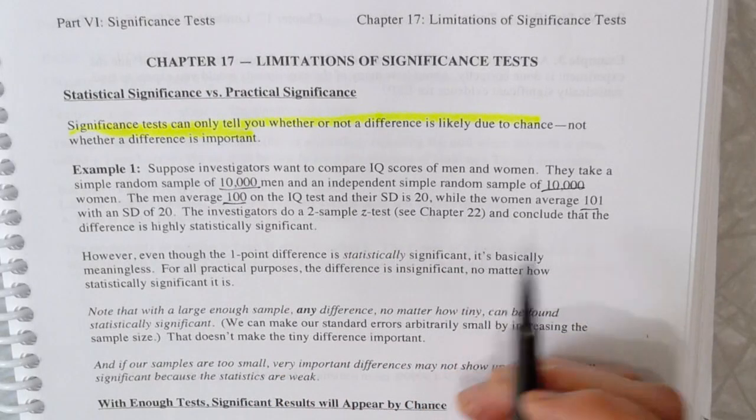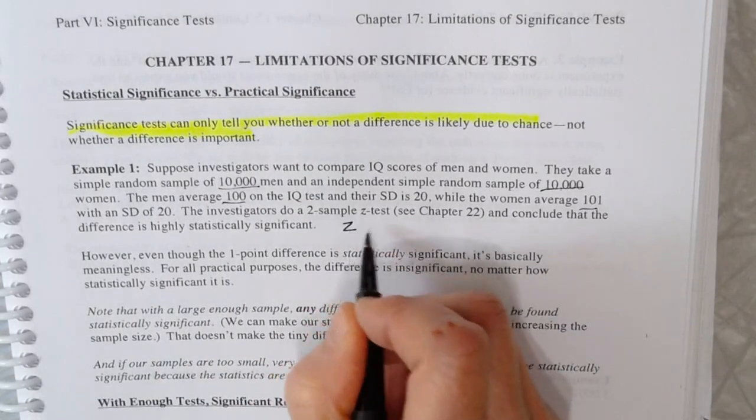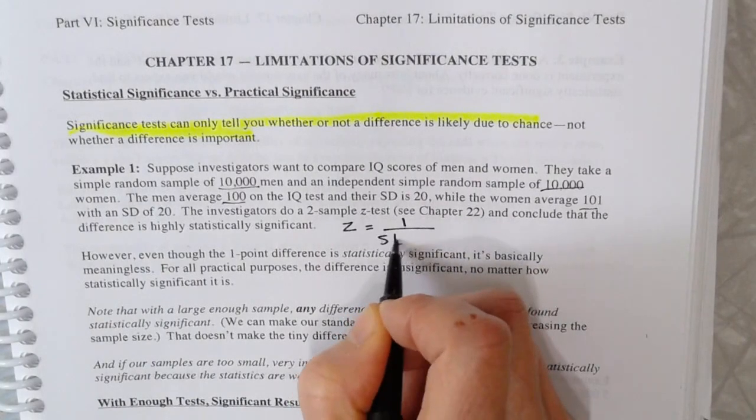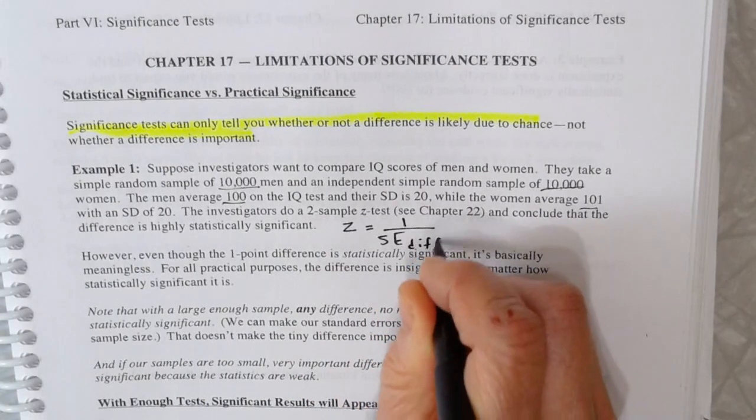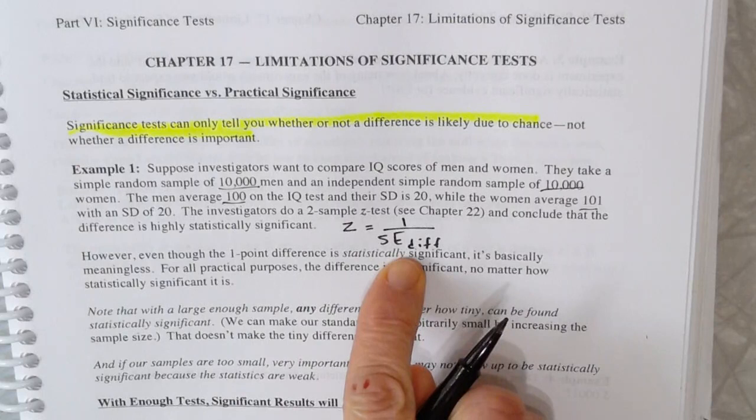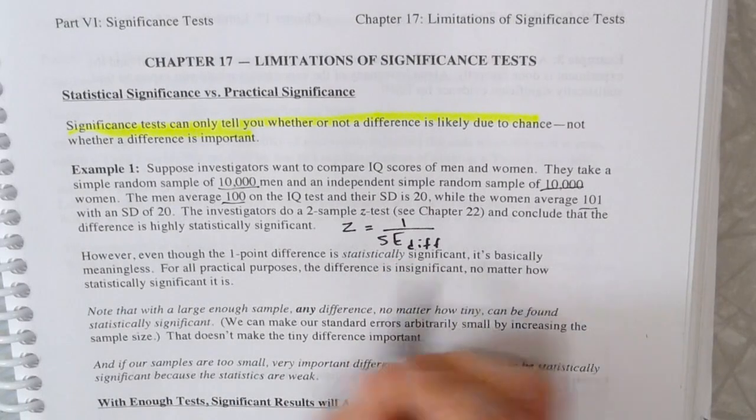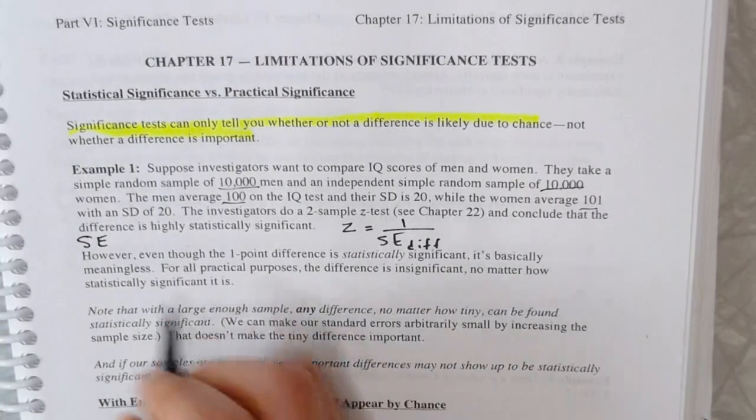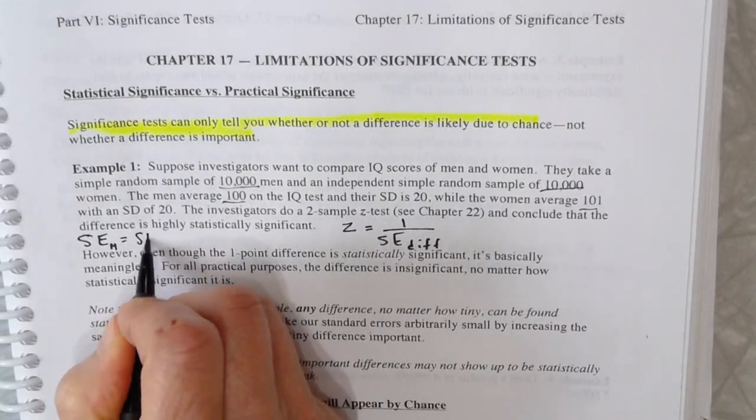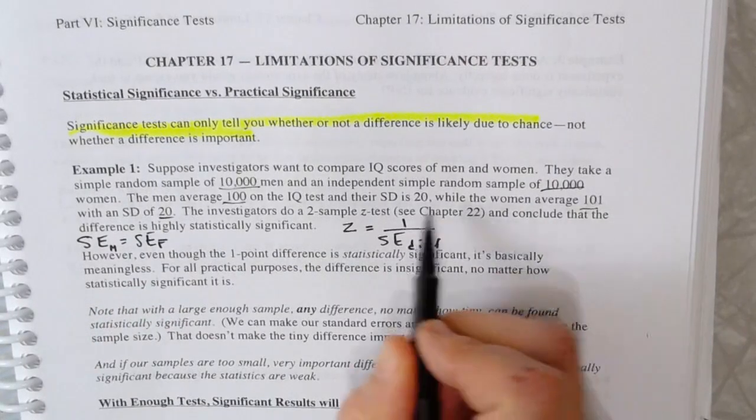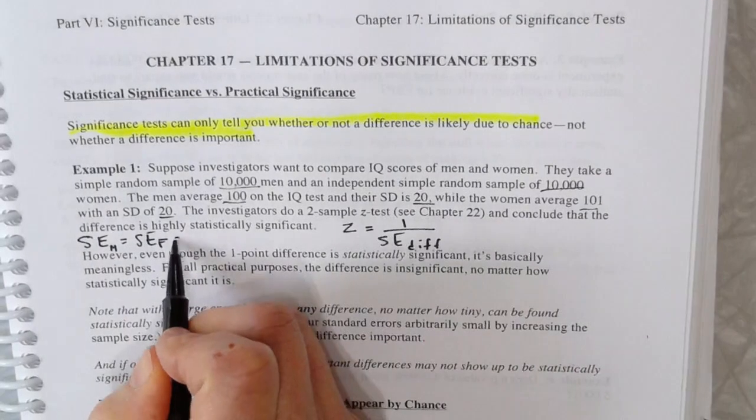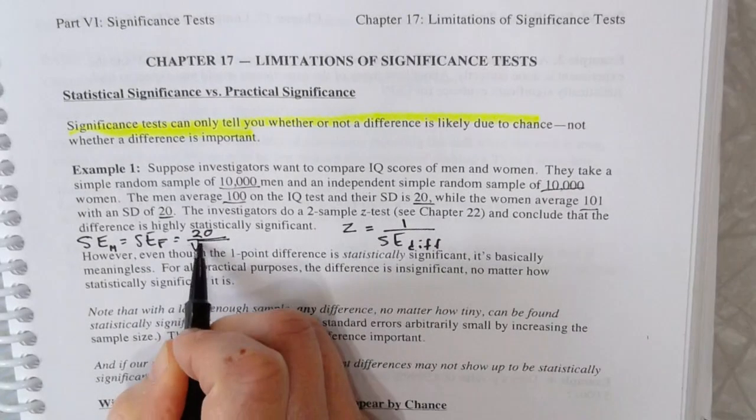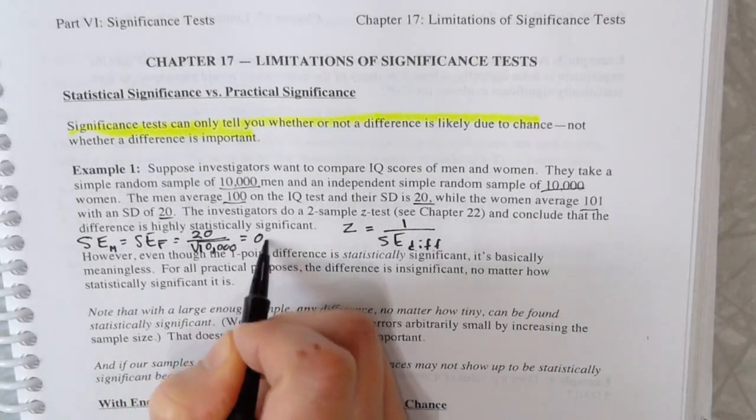Like if we figured out a z-score, remember what z is, z equals the observed difference, so that would be a 1 point difference, over the standard error for the difference. And this standard error would be figured as what? We'd have to figure out the standard errors for each of the samples for the males and the females, and they'd be the same, because they have the same standard deviation here, and the same sample size. And we're talking about averages, so it would be the sd over the square root of 10,000. So that's 0.2.